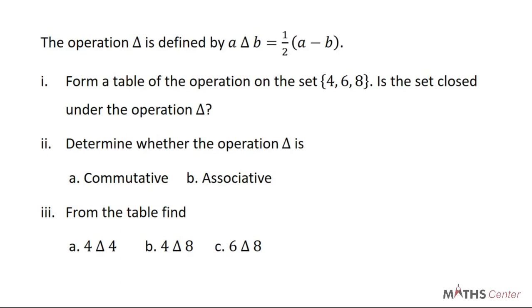The operation delta is defined by: a delta b = (1/2)(a − b). We are asked to: (i) form a table of the operation on the set {4, 6, 8} and determine if the set is closed under delta; (ii) determine whether delta is commutative and associative; (iii) from the table find 4 delta 4, 4 delta 8, and 6 delta 8.